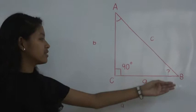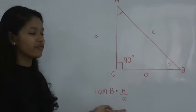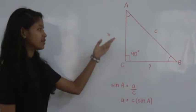Triangle ABC is a right triangle. Given three angles and two sides, we use the function sine to solve for side A. Sine is equal to opposite over hypotenuse. Sine A is equal to a over c.